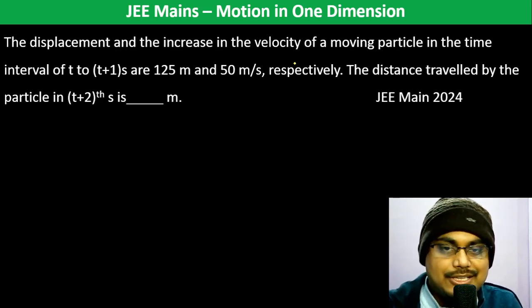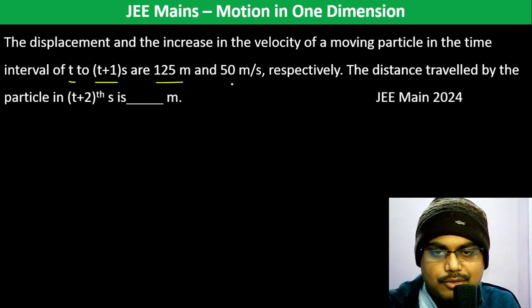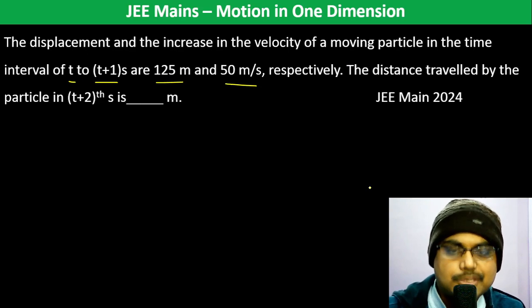The displacement and the increase in the velocity of a moving particle in the time interval from T to T+1 are 125 meters and 50 m/s respectively. The distance traveled by the particle at T+2 seconds is...